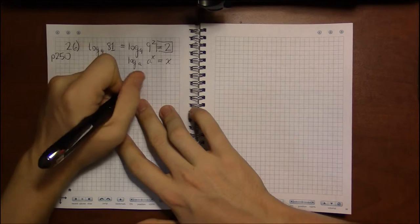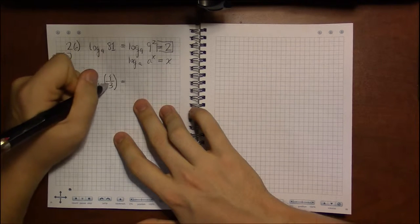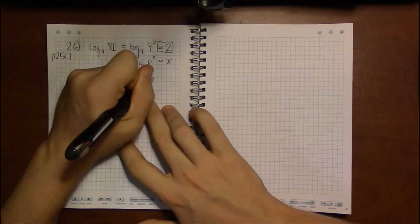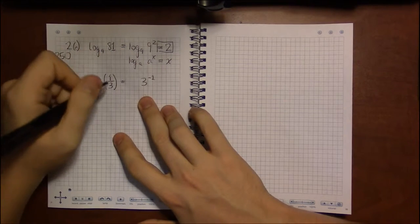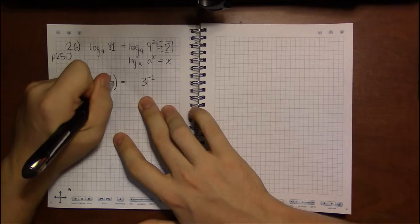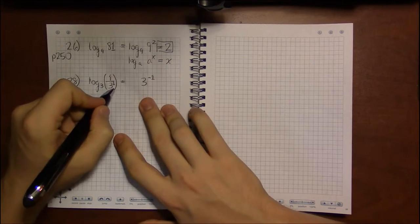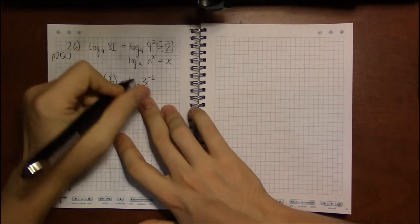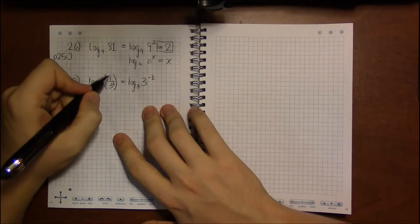Well, in order to do that, I'm going to have to pull this 3 from the denominator, I'm going to have to pull it up to the numerator, which means I have to change the sign of its exponent. And its exponent is just 1. So 3 to the minus 1 is 1 third.